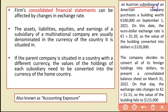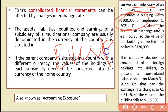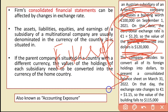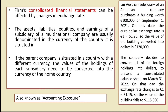For example, an Austrian subsidiary of an American company purchases a building worth 1 lakh euro on 1st September 2021. On that date, the euro-to-US dollar exchange rate was 1.20, so the building was recorded as $1,20,000. However, when the financial statements were consolidated on 31st March 2022, the exchange rate had changed to 1.15, so it had to be recorded as $1,15,000.